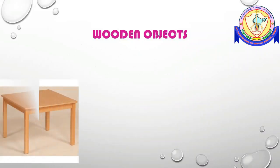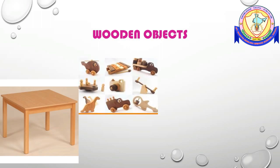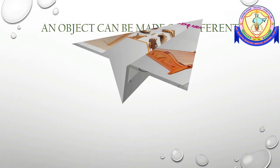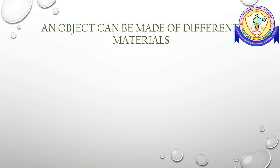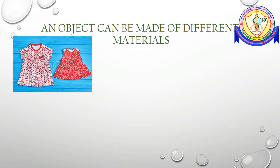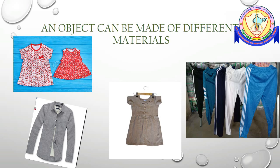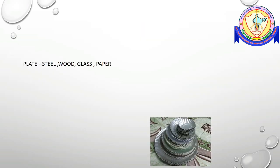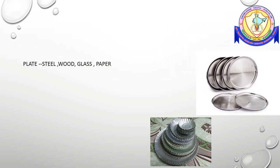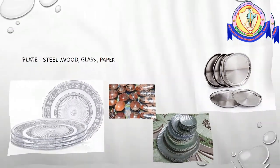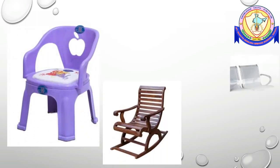Wood can be used to make many things like tables, toys, cots, and chairs. An object can also be made of different materials. For example, clothes are made from cotton, linen, nylon, or jute. A plate can be made of steel, wood, glass, or paper. Chairs can be made of plastic, wood, or steel.